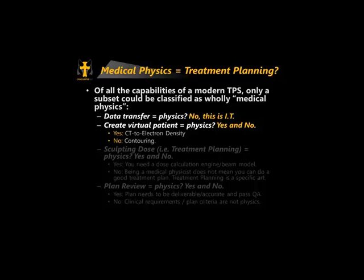We need to convert CT images — generated with kilovoltage x-rays — into a model that our dose algorithm can calculate accurately. That's physics. But think about creating a virtual patient: aside from making tissue voxels used in the algorithm, the main role is contouring. And contouring is certainly not physics. It requires anatomy, and to a certain extent physiology. If you're defining targets, it takes knowledge of where extensions of clinical disease can go — but that's not physics.